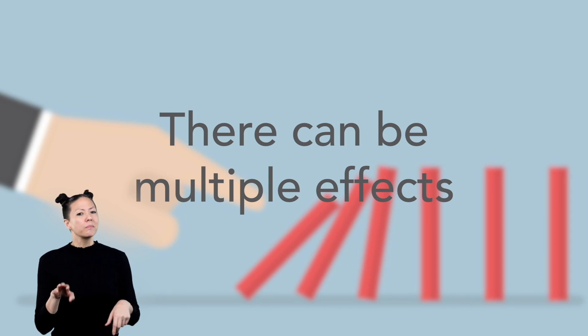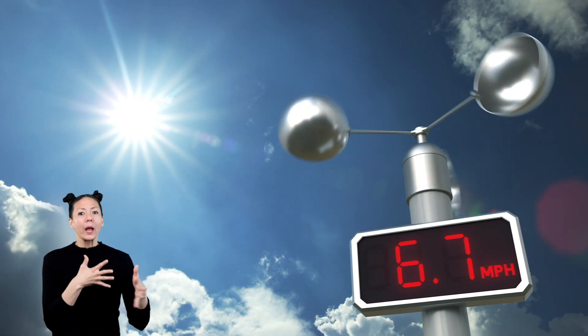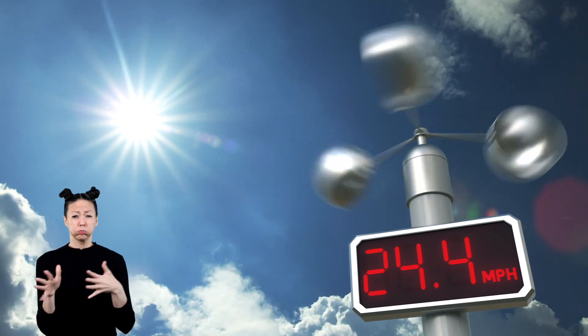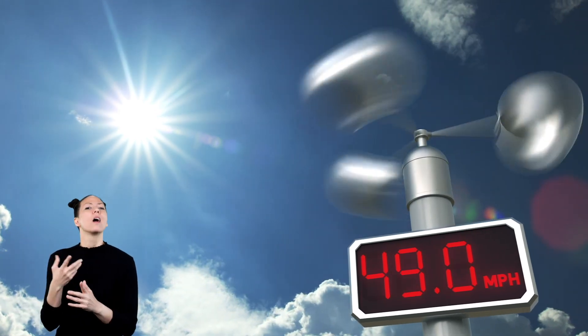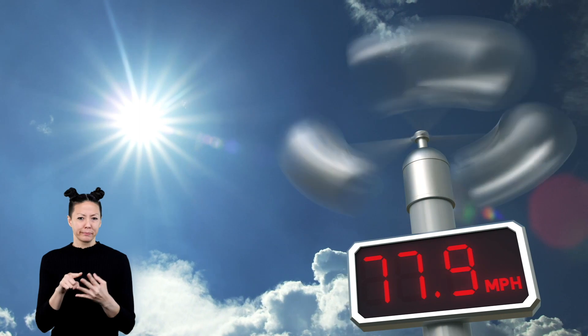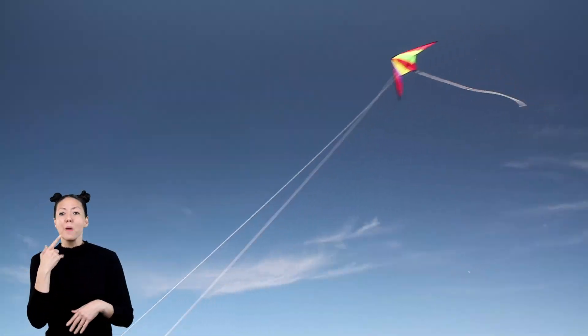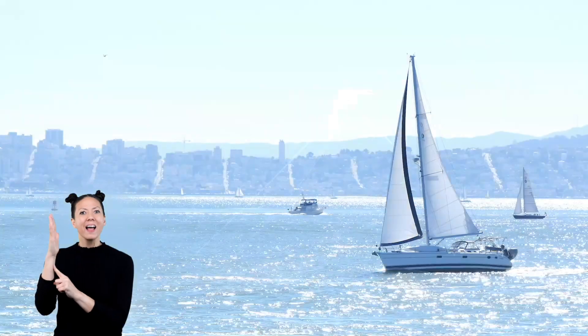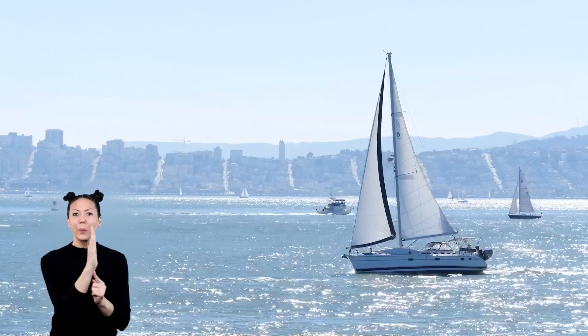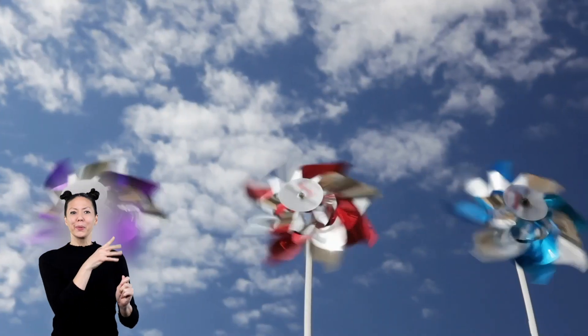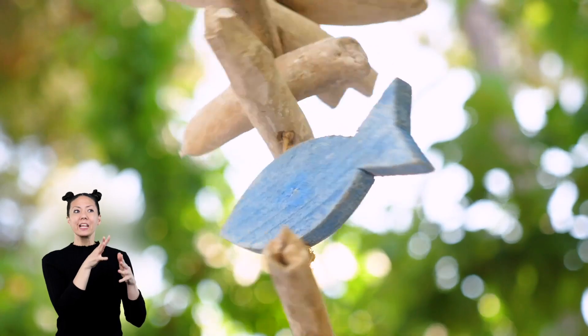Sometimes there can be more than one effect from a cause. Think of the wind. The cause is it's windy outside, but the effect can be more than one thing — in fact, it can be many things. Wind can cause you to be cold on a cool day, or it can cool you down on a hot day. Because of wind, you could fly a kite, and a sailboat can move through the water. A pinwheel will spin when it's windy, and wind chimes will make music. Those are all effects of the wind.